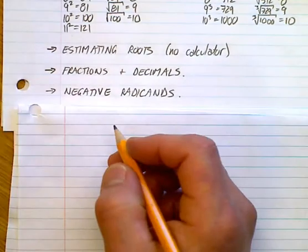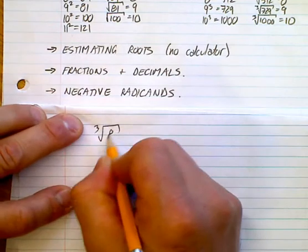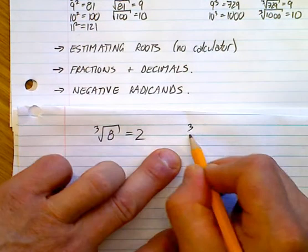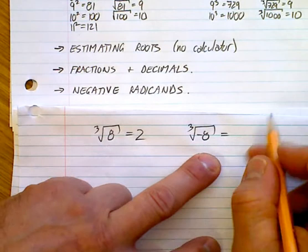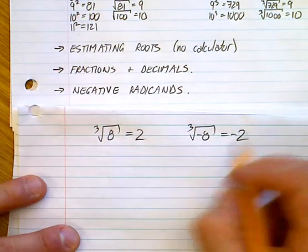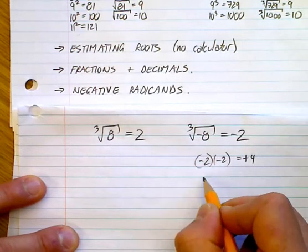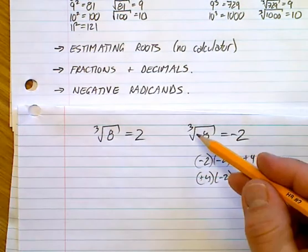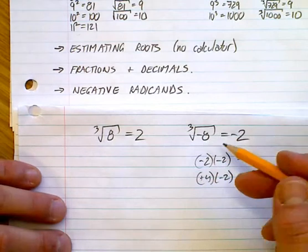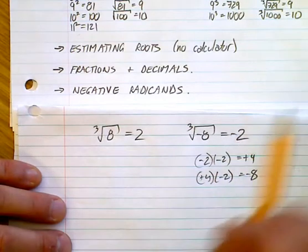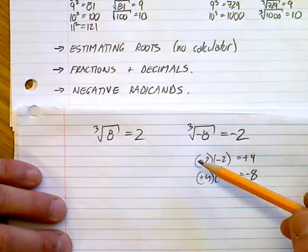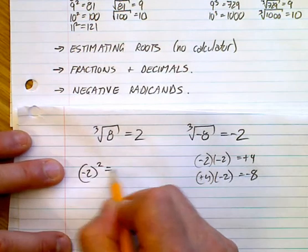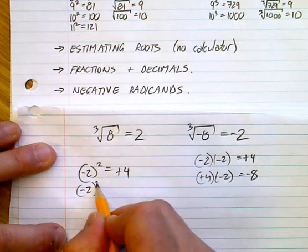Let's look at negative radicands. Can you give me the cube root of 8? That's 2. Can you give me the cube root of negative 8? Yes, it's negative 2, because minus 2 times minus 2 equals positive 4, and positive 4 times minus 2 equals negative 8. When you multiply by a negative, it jumps back and forth: positive, then negative, then positive.